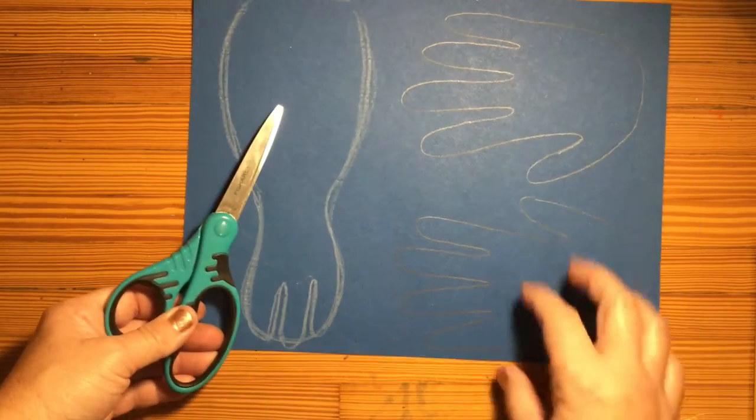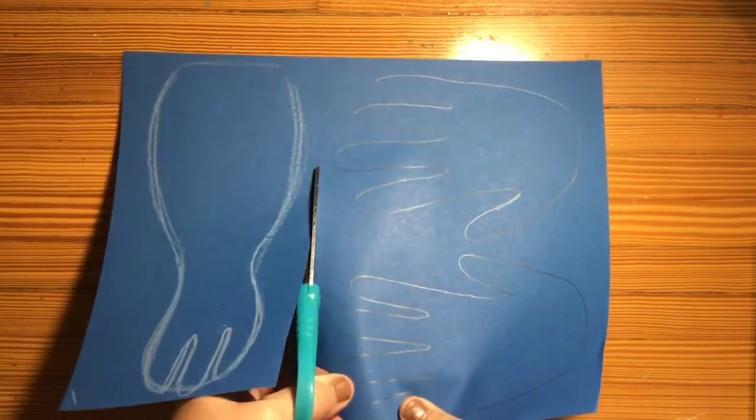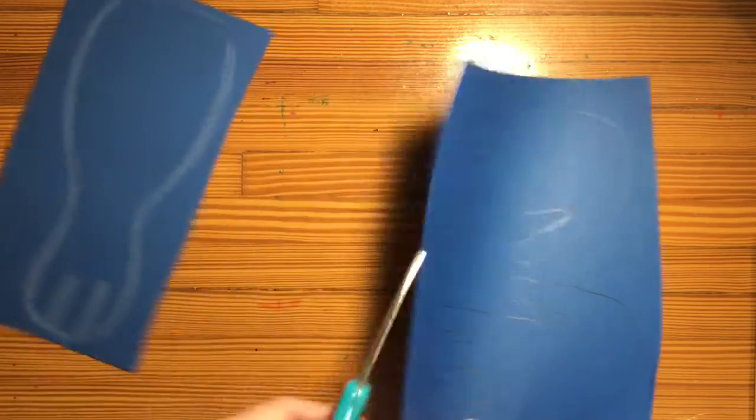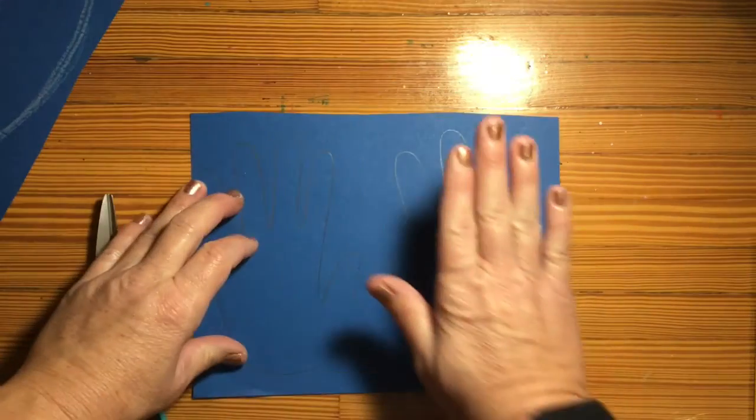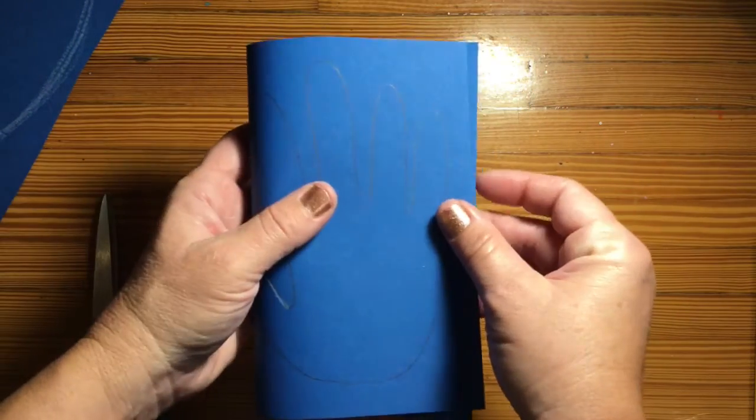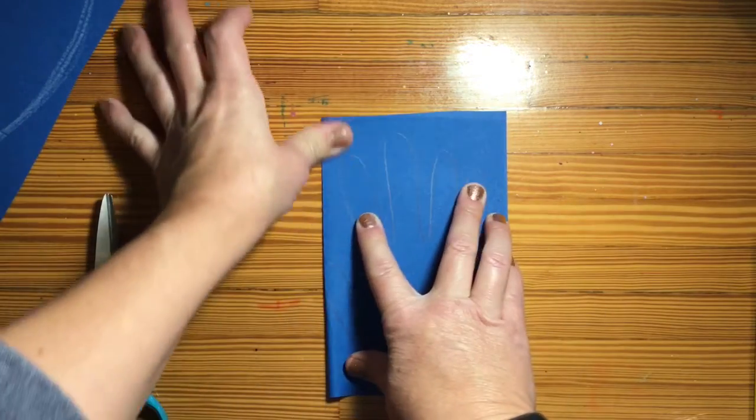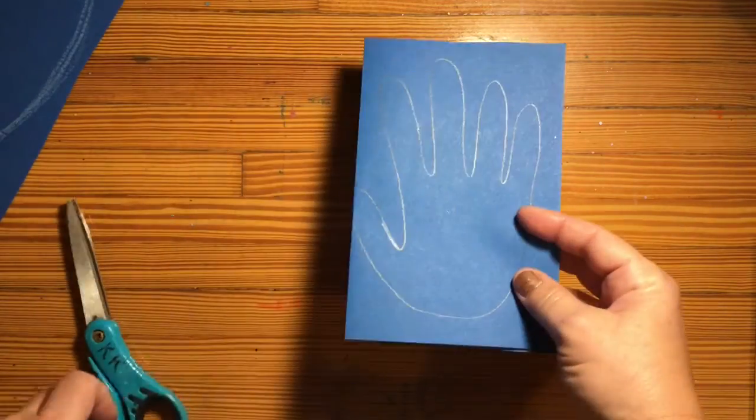Next you're going to have to cut everything out. I'm going to give you a trick if you're doing this by yourself and you're at home and you can only trace one hand. If you fold it in half you can cut out two hands at one time.